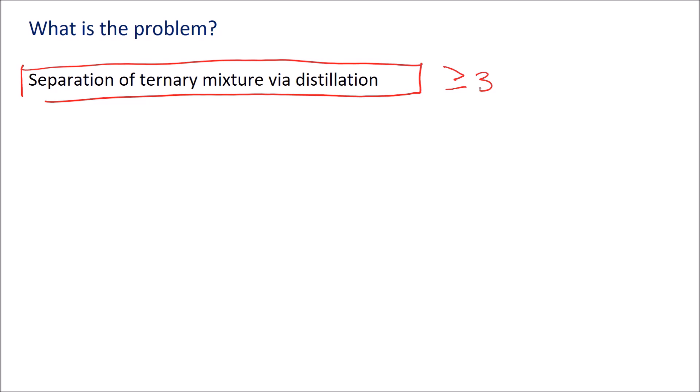So let's name those components for convenience. We'll have a light component, a middle boiling component, and a heavy component. And let's give those names for convenience. So unimaginatively, we will call them A, B, and C.